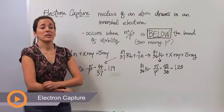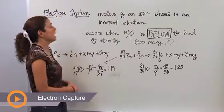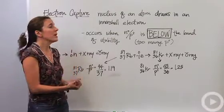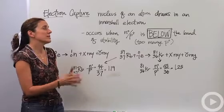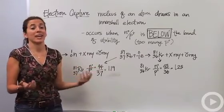Alright, so one of the nuclear reactions that you might come across in class is going to be electron capture, also known as K-capture. And that's when the nucleus of an atom draws in an inner shell electron, hence the name electron capture.